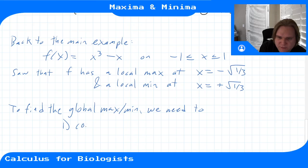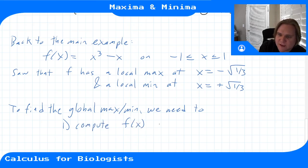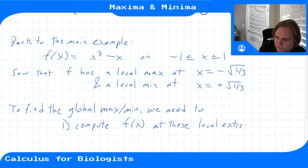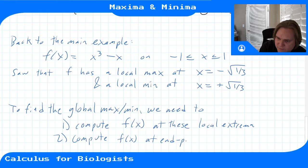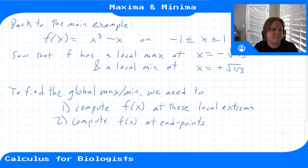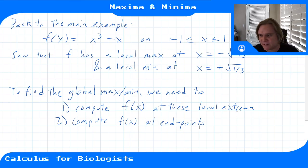Step one: compute f(x) at the local extrema. Step two: compute f at the endpoints. Then compare—picking the biggest and smallest numbers tells us the global max and global min.